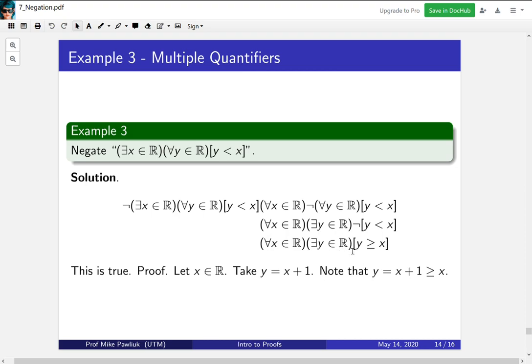The next part is an existential thing. It's our job to come up with a y. And we can use anyone we want. And it's allowed to depend on the x. So what's the y we're going to pick that's bigger than x? Well, let's take x plus 1. Finally, does it have the property? Yes. x plus 1 is greater or equal to x.